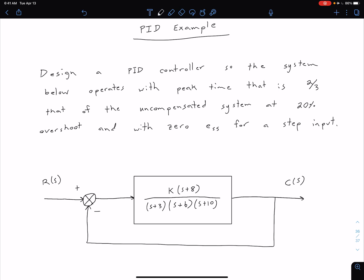We notice that this is a type zero system based on this G of S block. That means we're gonna have to have our PI compensation to increase our system type. And we're also going to have to adjust our transient response to make that quicker. So that's where our PD compensation is coming in.